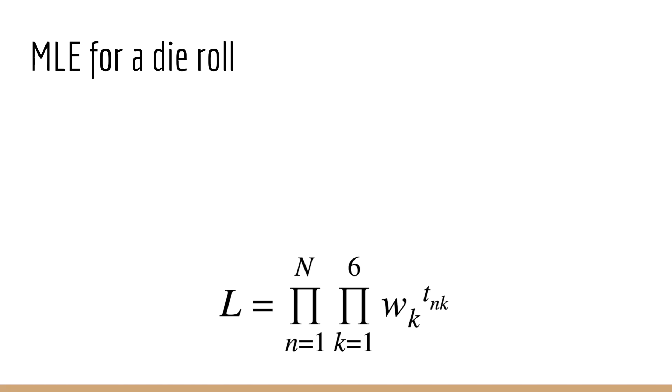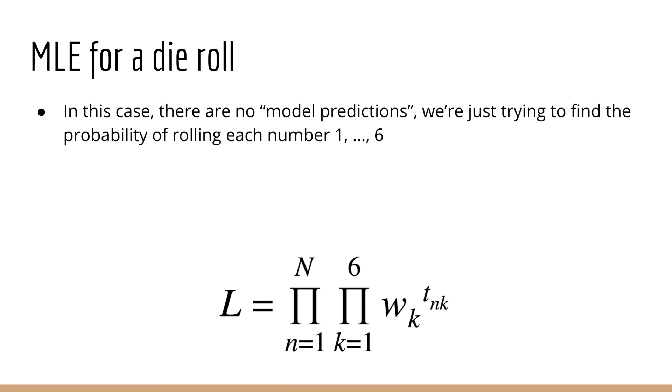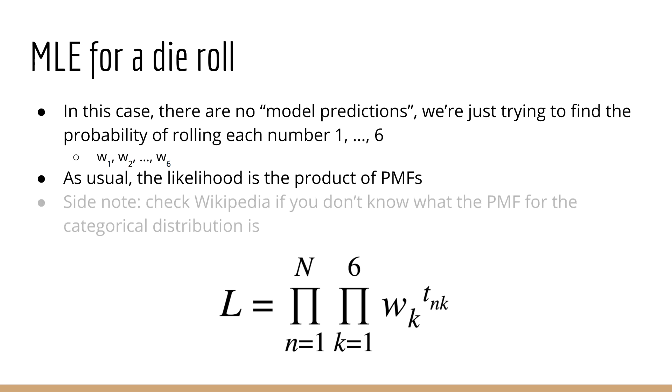Now, because this is a die, we don't have any model predictions, so there are no y's. Instead, we just have the probability of rolling each of the k values. Let's call them w1, w2, up to w6. Then our likelihood is written as follows. It's the product over all n and the product over all k of w sub k to the power of T of n k. By the way, it's good to remember that the likelihood is just the product of PMFs or PDFs for each of the n data points. So if you're not familiar with the PMF of the categorical distribution, please check out Wikipedia to remind yourself.